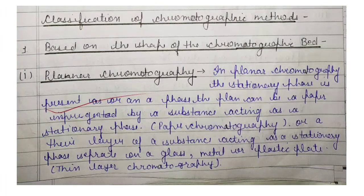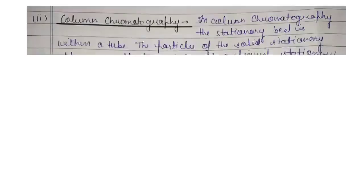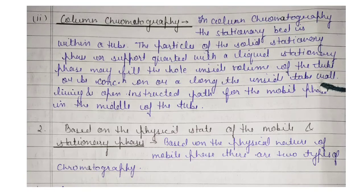The first type is planar chromatography and the second type is column chromatography. If you provide notes on this, you will understand.